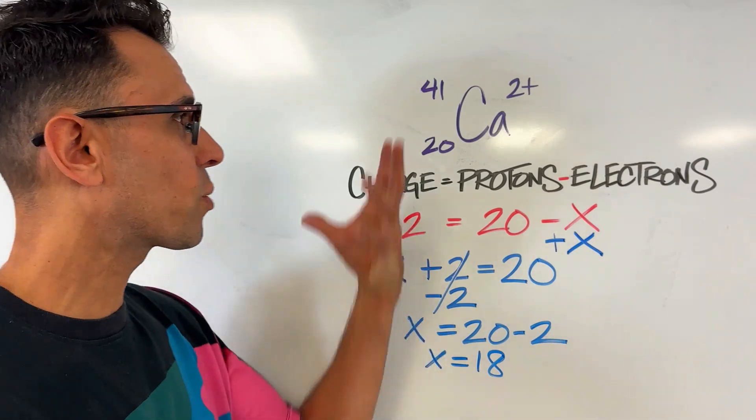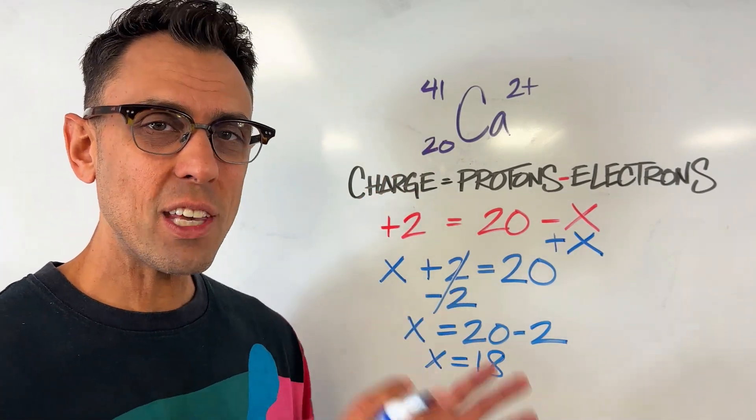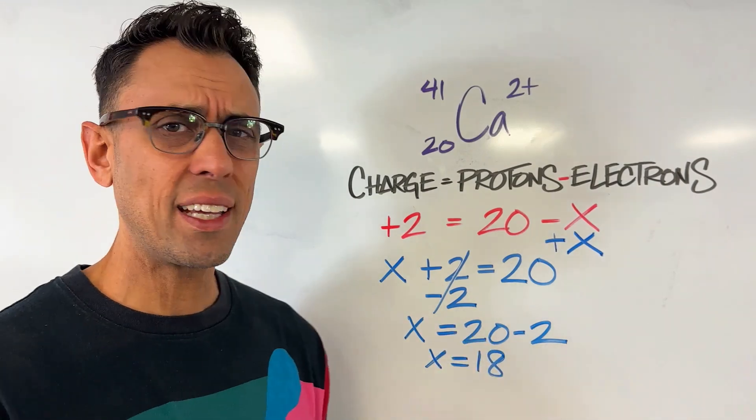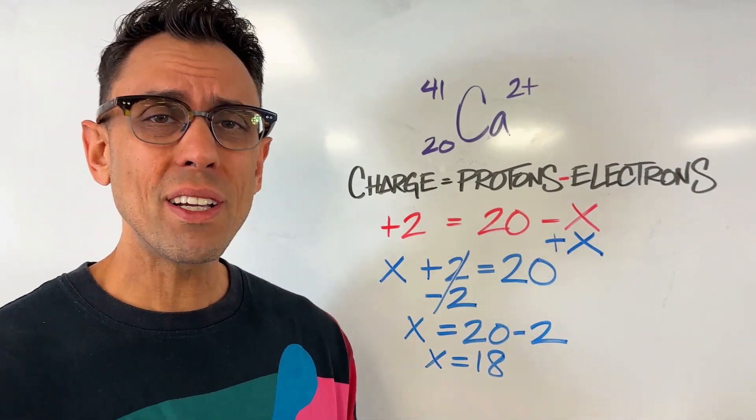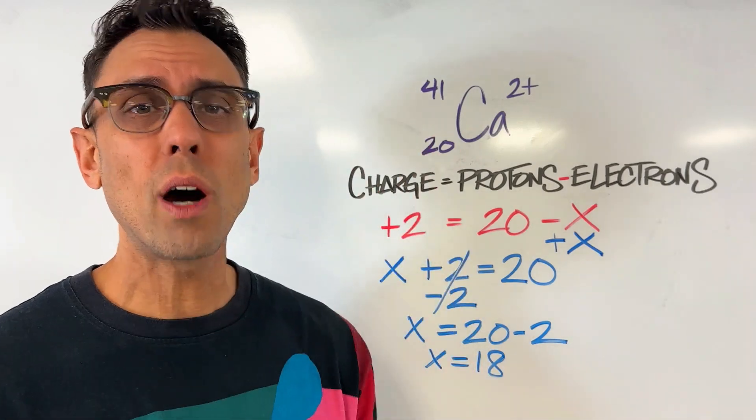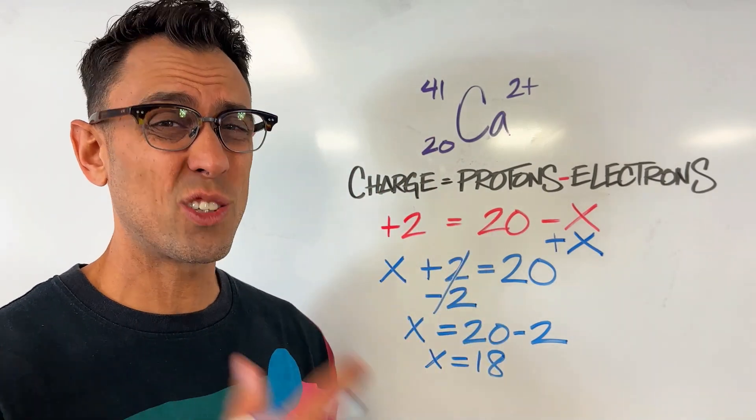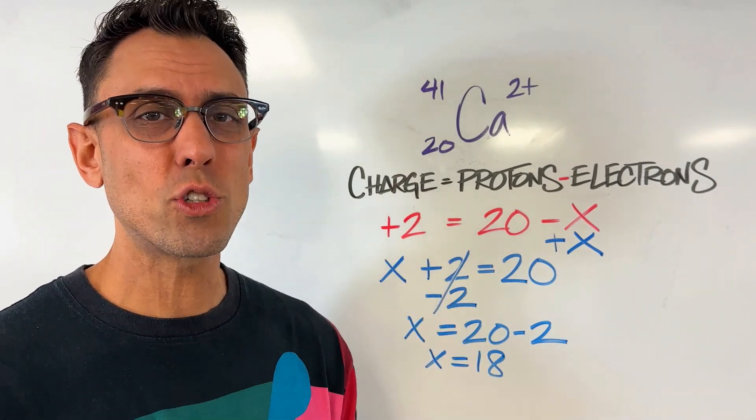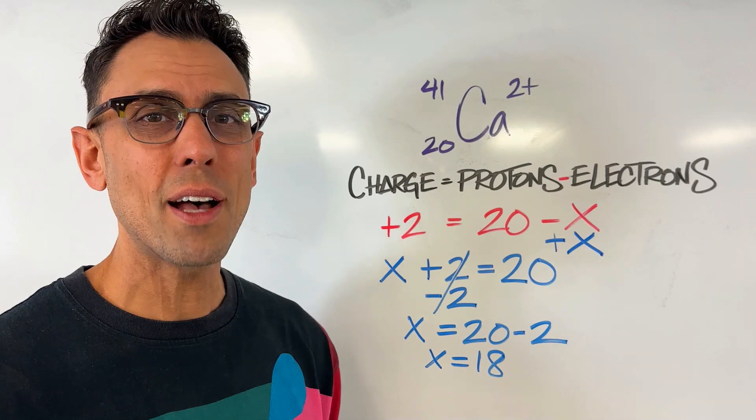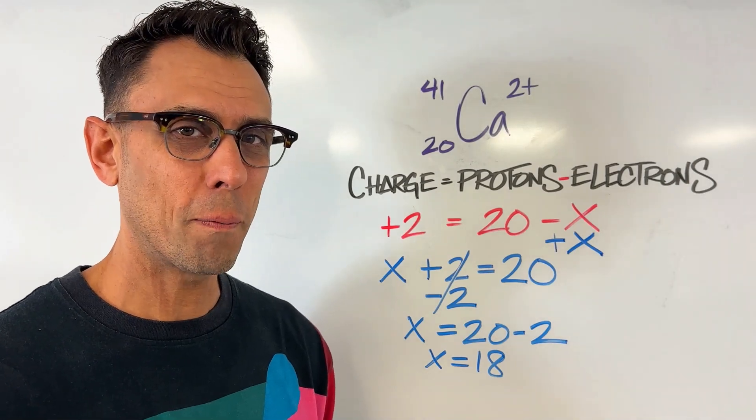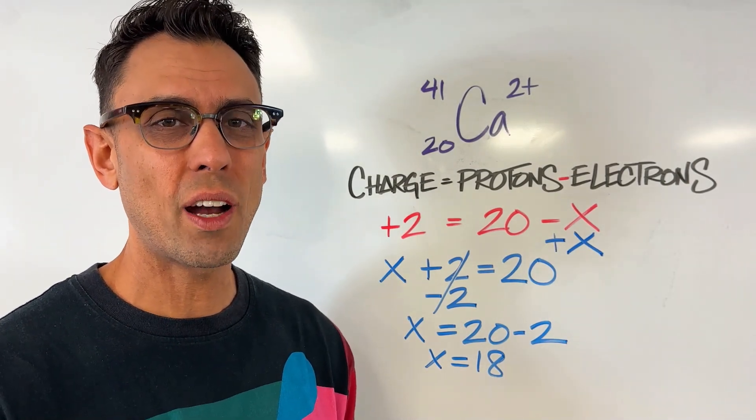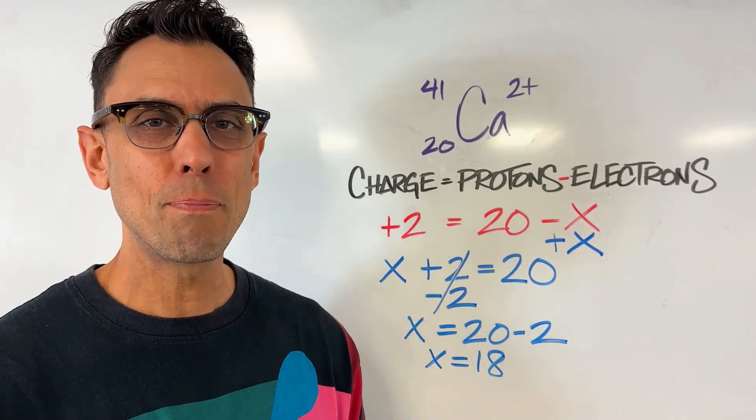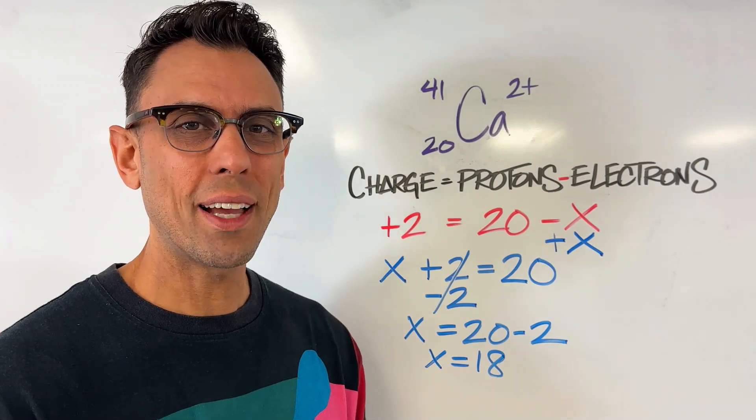Now let's think about why this results in a 2 plus charge. A calcium atom has 20 positive protons. If it only has 18 negatively charged electrons, there is not a partner for two of those protons, right? Two of those protons don't have a matching electron to cancel out their positive charge. So it's those two extra protons that result in this 2 plus we see in the upper right hand corner. Now it's time for you to try one on your own. Following these exact steps, you're about to get this question right and get this much closer to understanding how electrons are determined.